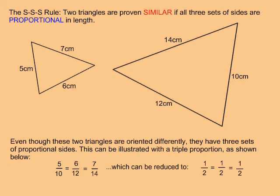If all three fractions reduce to the same value, then the three sides are proportional and the triangles are proven similar. In this case, all three fractions reduce to one half, so these two triangles are similar.